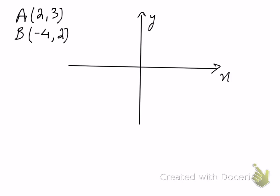So that basically means that x is 2 and y is 3. So when x is 2, that means I'm going to be moving two units towards the right, which is the positive side of x. So here I have the x-coordinate, and now the y-coordinate is 3, so that means I'm going to be moving three units up the y-axis. So here is A with coordinates.